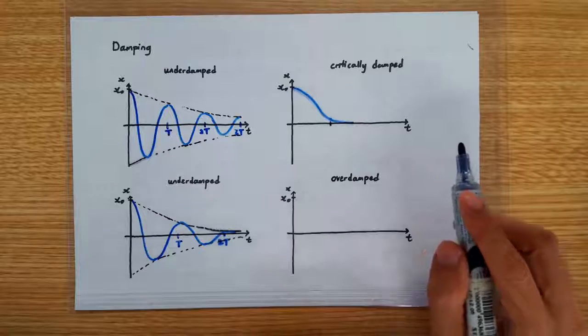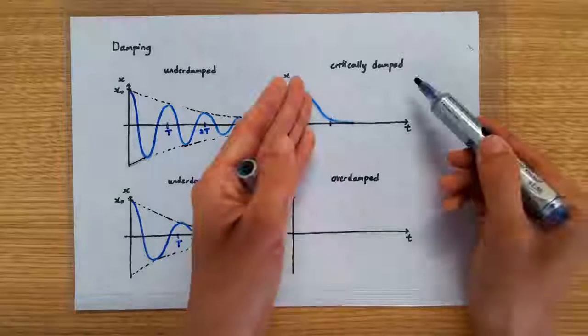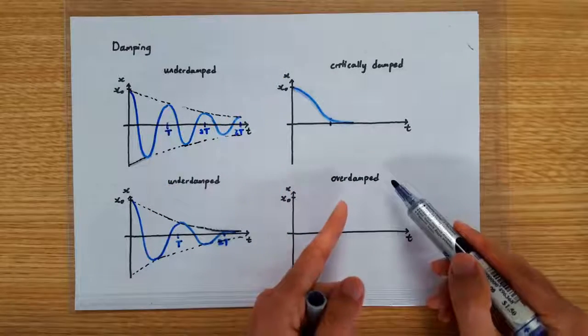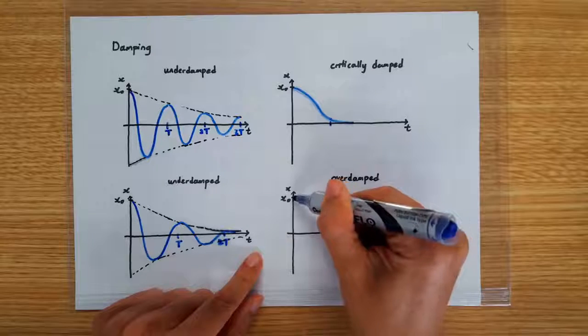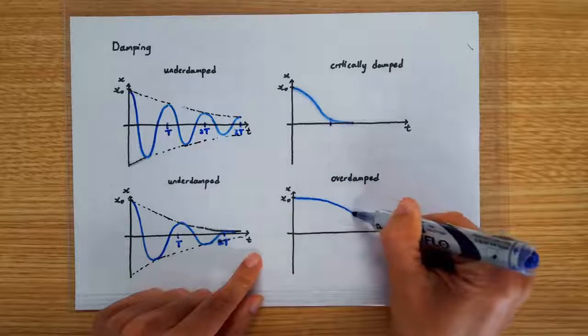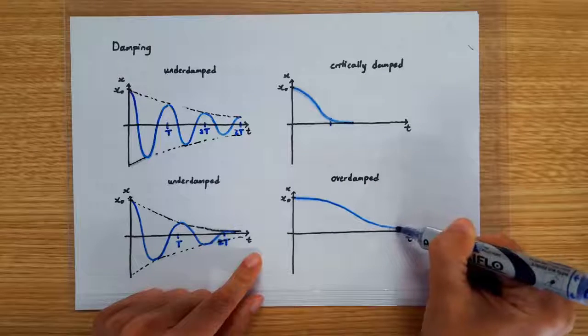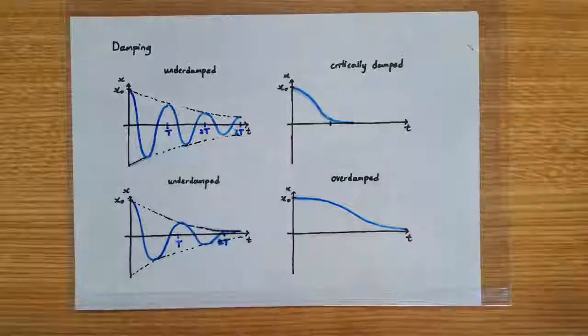If you go beyond critical damping, we are at what's called over damping. It just means that the oscillation will take longer time to be brought to rest compared to critical damping.